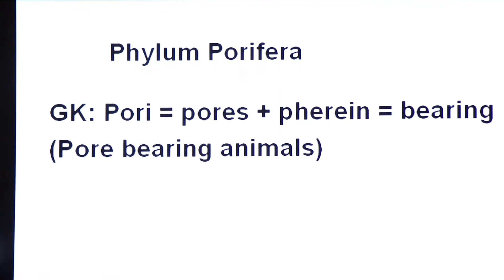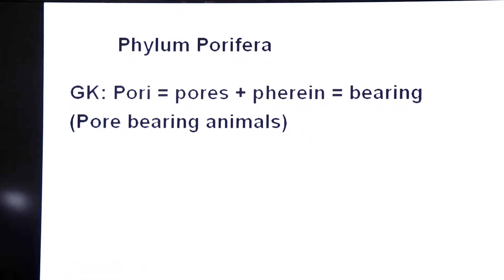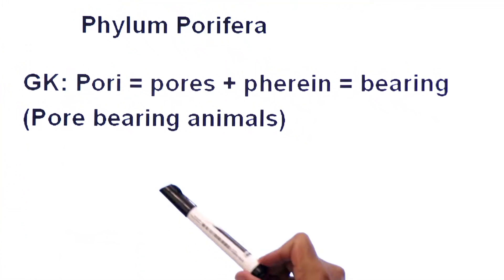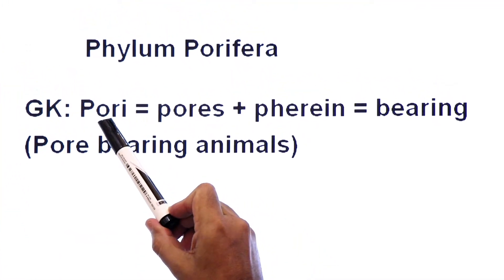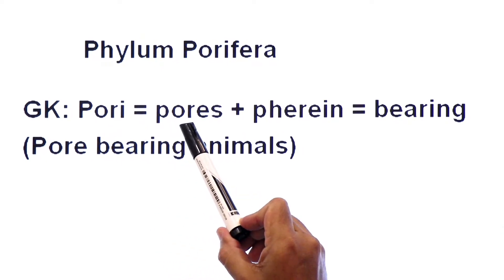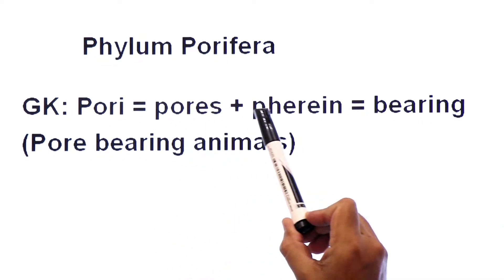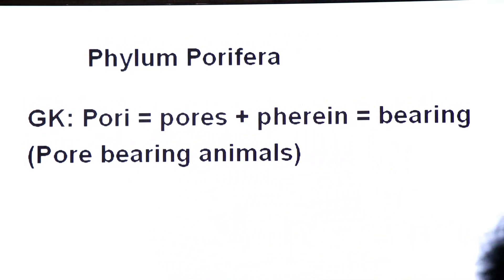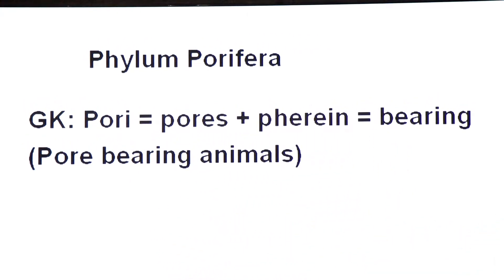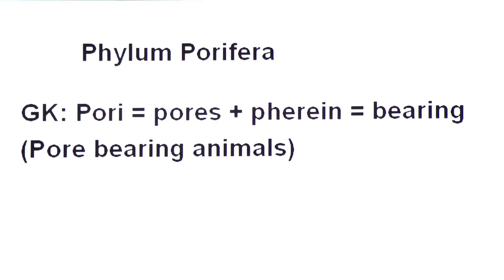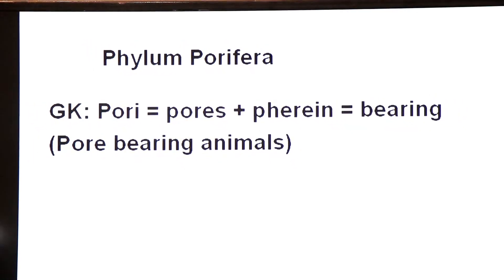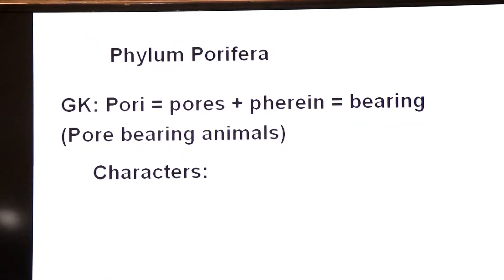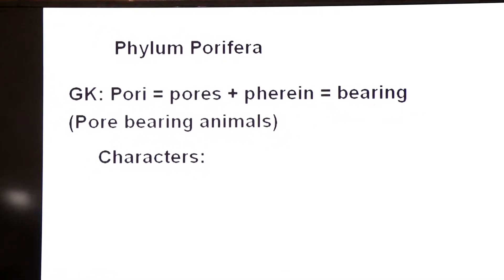The term Porifera comes from the Greek language. 'Pori' means pores and 'pharian' means bearing. They are commonly called pore-bearing animals because their body is porous, having pores.